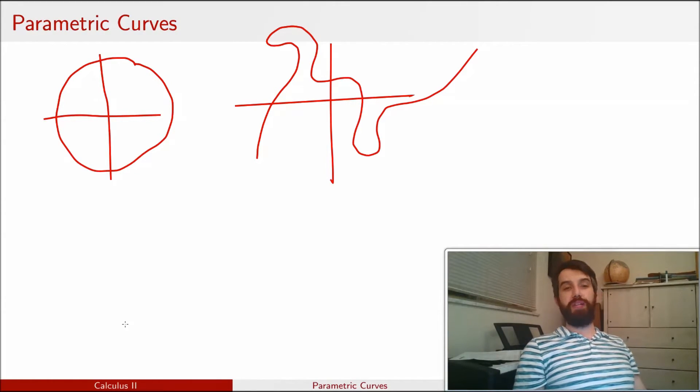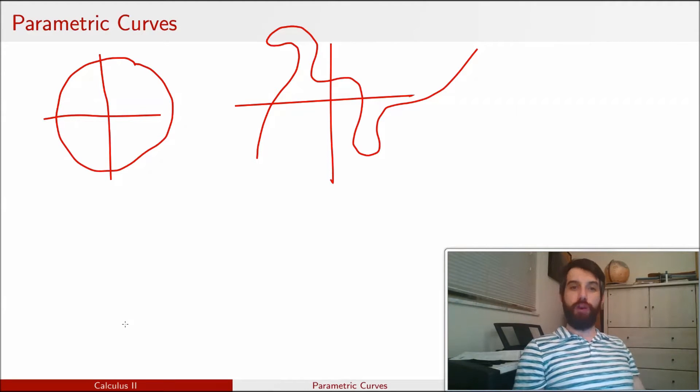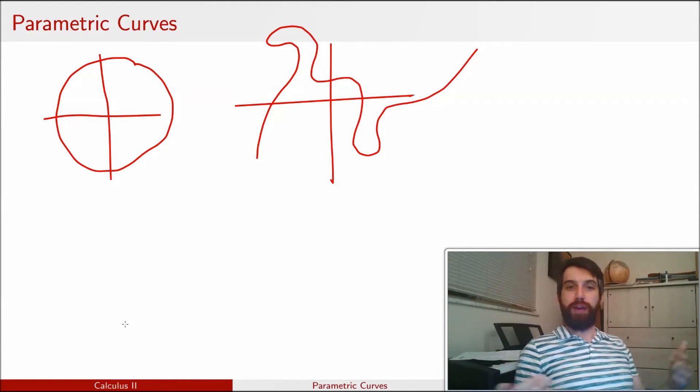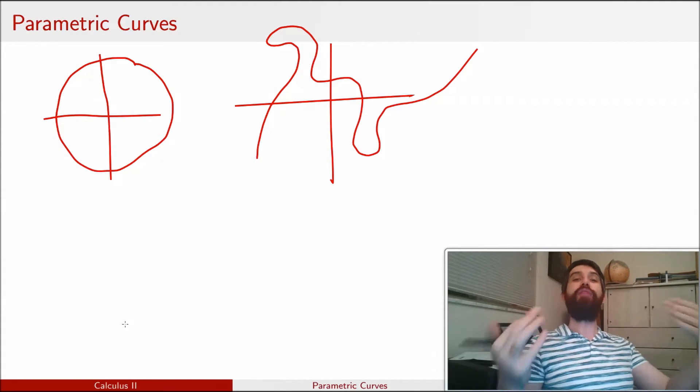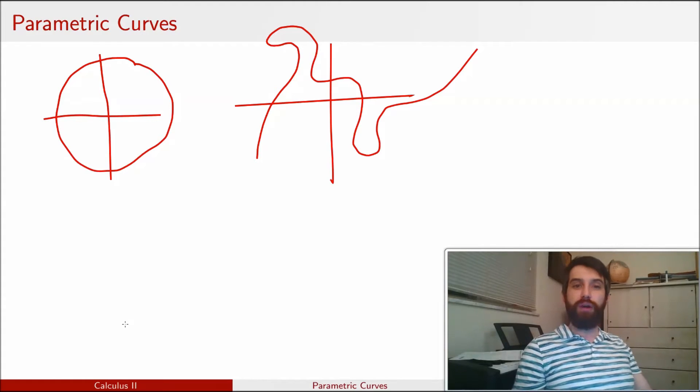So one way that we can describe these more general curves, curves that are not just the graph of a function, is so-called parametrically. And the idea behind describing a curve parametrically is to write both the x coordinate and the y coordinate, maybe even a z coordinate or more if I have them, all of those different coordinates in terms of some other variable, a parameter that I call t.